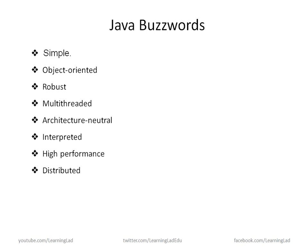The next and last Java buzzword is that Java is a dynamic programming language. You can dynamically link code in a safe manner in Java.